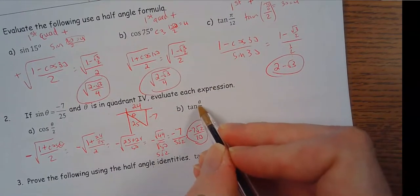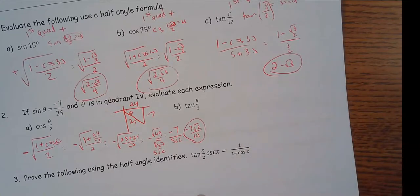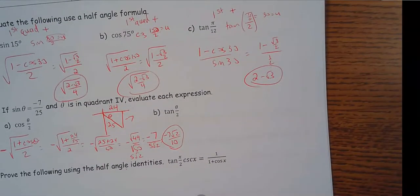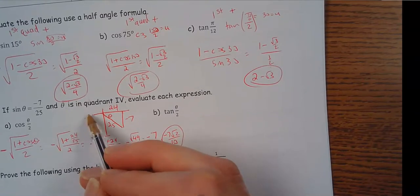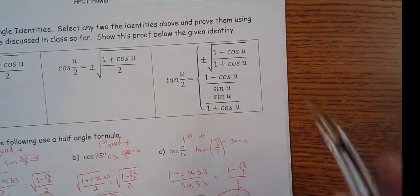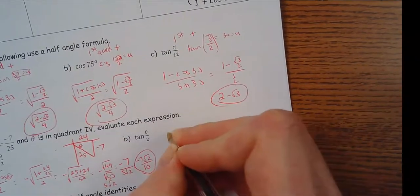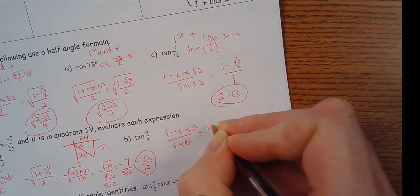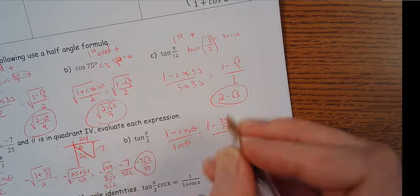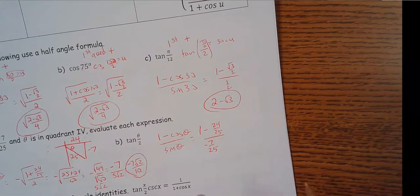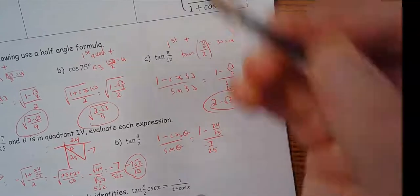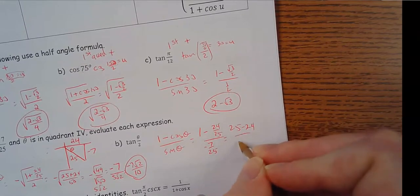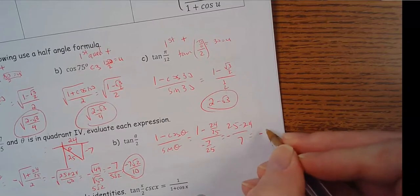Using the same triangle, tangent(θ/2): I'll use the formula (1 − cosine θ) / sine θ to avoid worrying about the sign. So: (1 − 24/25) / (−7/25). Multiplying everything by 25: (25 − 24) / (−7) = 1 / (−7) = −1/7. Notice it came out negative, which I said it should be, but using this formula it took care of itself.